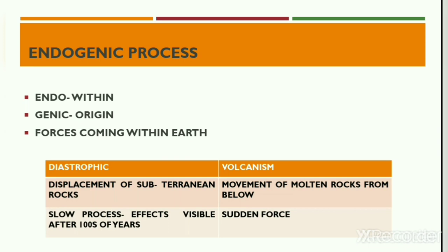Diastrophism is one of the endogenic processes that refers to the displacement of subterranean rocks. The diastrophic process operates very slowly and its effects become visible only after thousands and millions of years. Take the case of the coast of the Baltic Sea — the coast of the Baltic Sea rises 1.3 meters in a century, which is generally invisible to our naked eye.